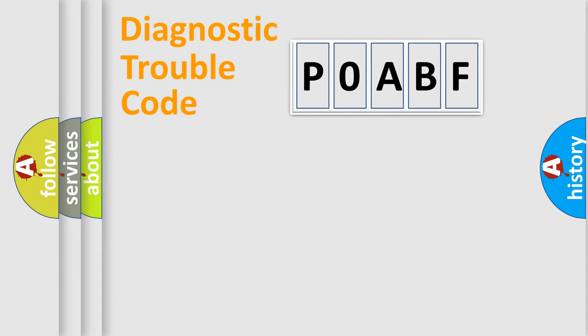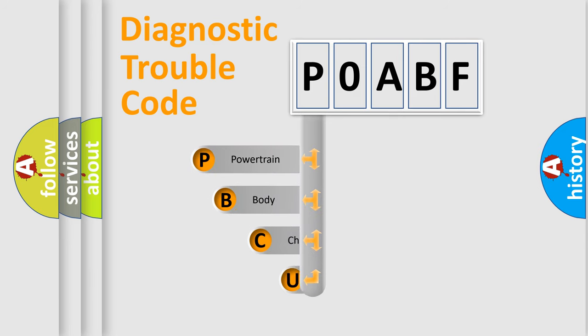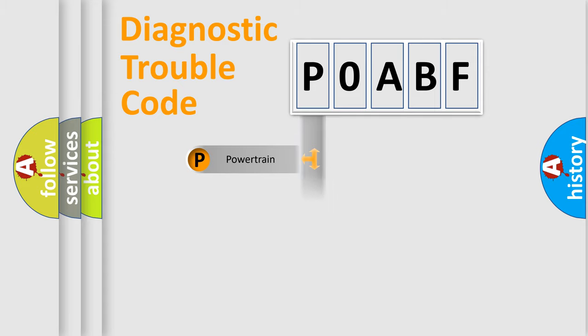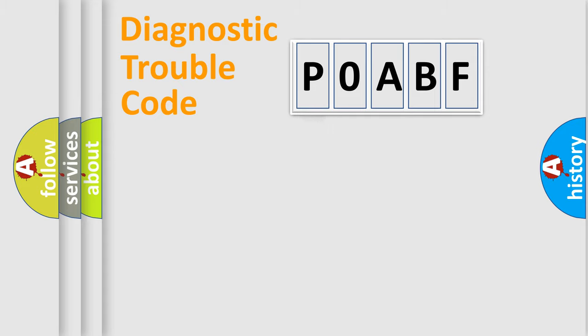First, let's look at the history of diagnostic fault code composition according to the OBD2 protocol, which is unified for all automakers since 2000. We divide the electric system of an automobile into four basic units: Powertrain, Body, Chassis, and Network. This distribution is defined in the first character of the code.